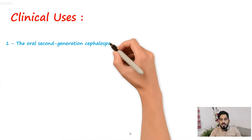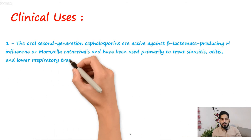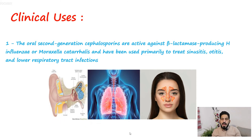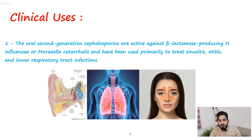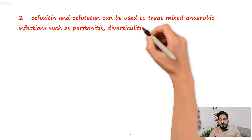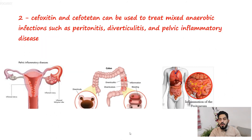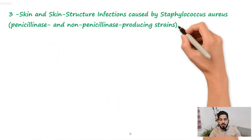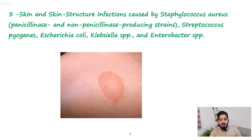Clinical uses of second generation cephalosporins: the oral agents Cefuroxime and Cefaclor are active against beta-lactamase-producing organisms. Cefoxitin and Cefotetan, which have activity against anaerobic bacteria, can be used to treat mixed anaerobic infections such as peritonitis, diverticulitis, and pelvic inflammatory disease.